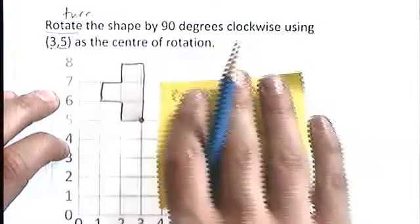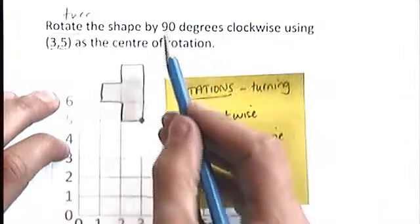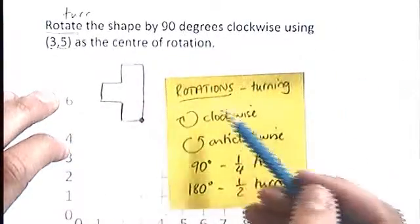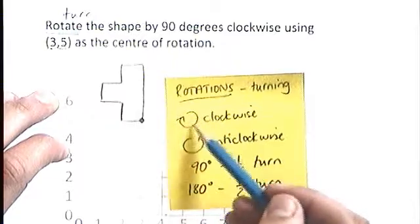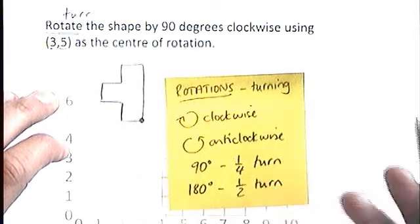Let's look at what we're told. We're told to do this 90 degrees clockwise. So if we look at the diagram, I'm going to be turning in that direction, and 90 degrees is a quarter of a turn.